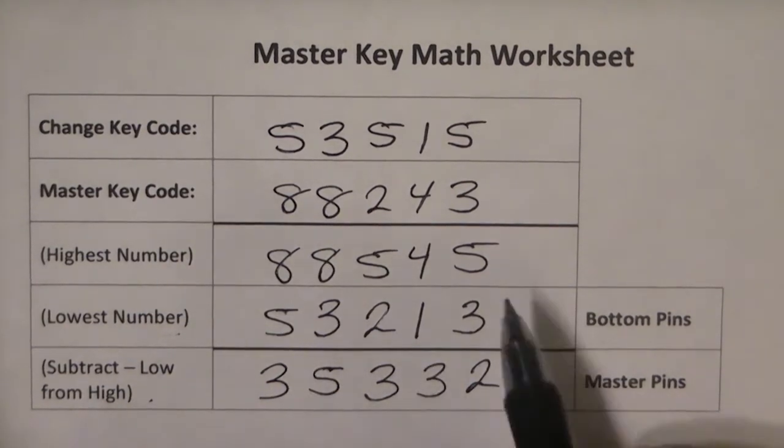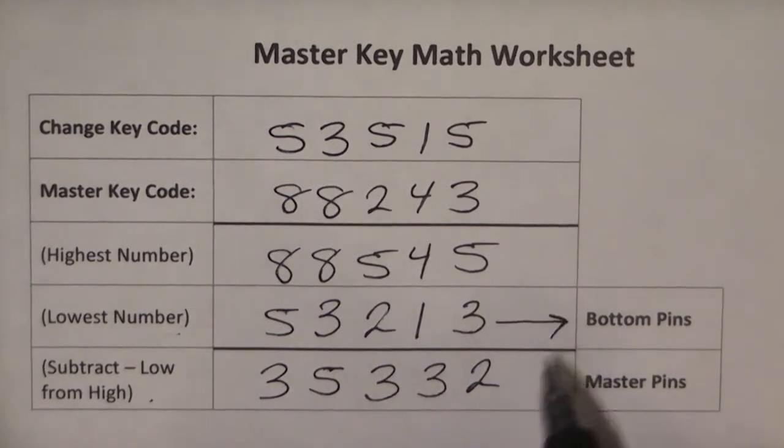The lowest numbers are your bottom pins. The subtracted numbers are your master pins.